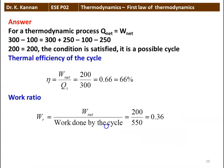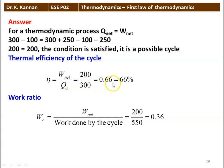For the thermodynamic process, net heat transfer equals net work transfer: 300 − 100 = 300 + 250 − 100 − 250, giving 200 = 200 — the condition is satisfied. Thermal efficiency eta = net work / heat supplied = 200 / 300 = 0.66, that is 66%. Work ratio WR = net work output / work done by the cycle = 200 / 550 = 0.36.